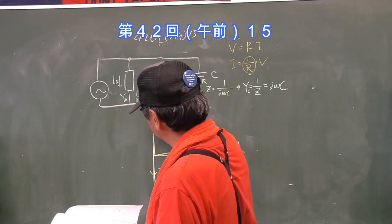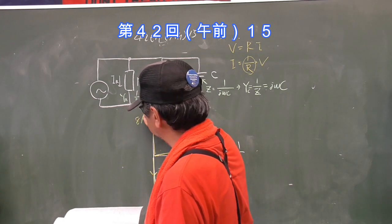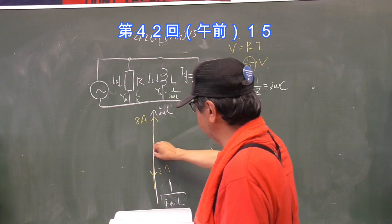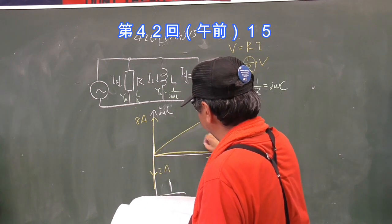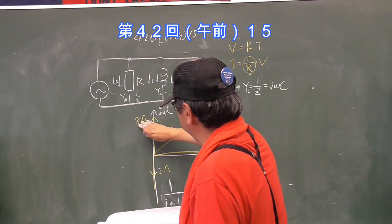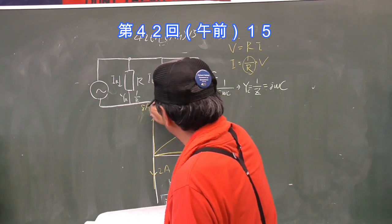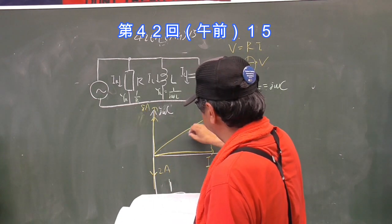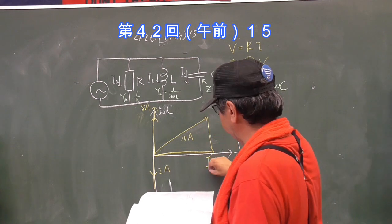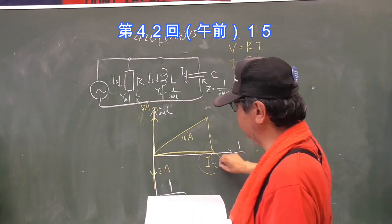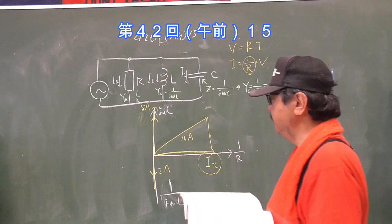電源を流れる電流は全部を足したものが10mAです。それに対してコイルを流れる電流が2A、コンデンサーに流れる電流が8A、そして全体に流れる電流が10Aです。そうした場合にここはいくらになりますか、という簡単な問題になるわけです。